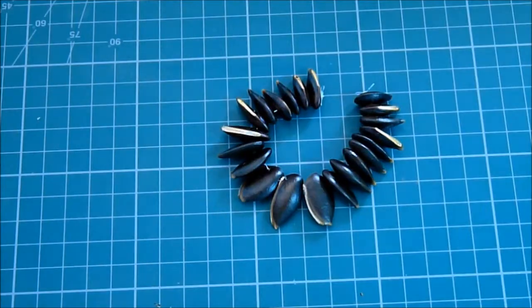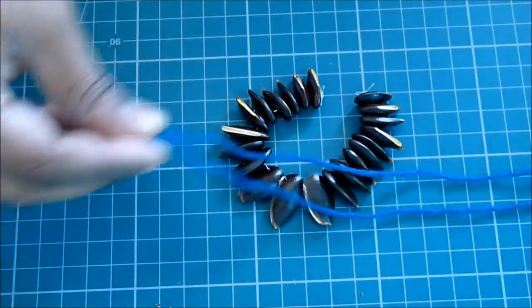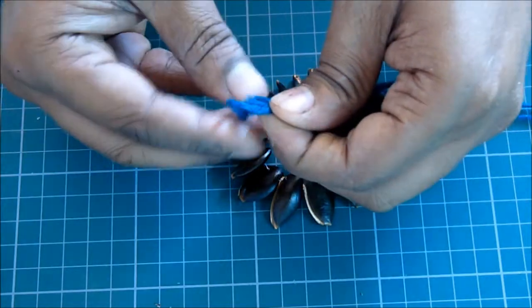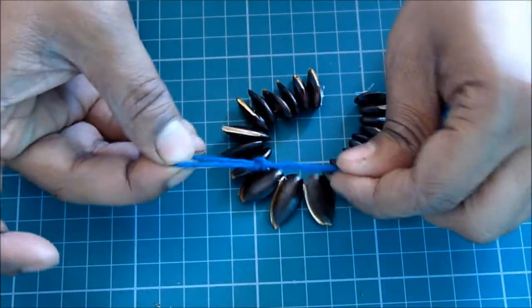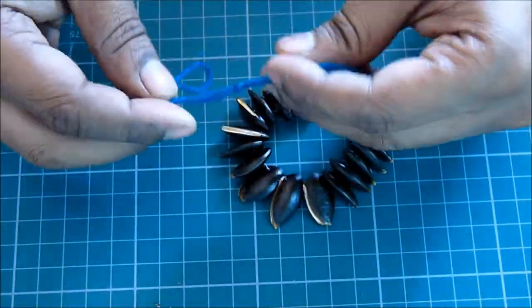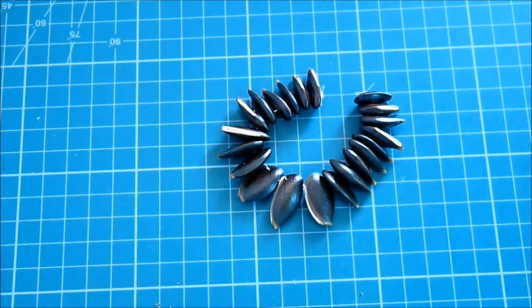Once done, you need like this kind of thick string or wool. Make a knot like this at regular intervals. This will be used to wear the necklace at the neck. You have to make such two strings.